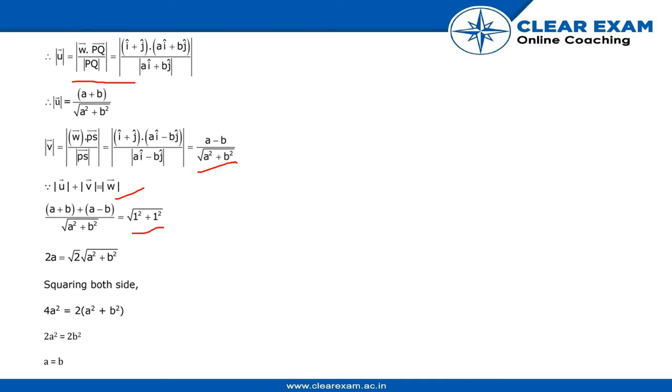Squaring both sides, we get 4a² = 2(a² + b²), so 2a² = 2b², therefore a = b.